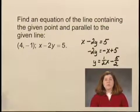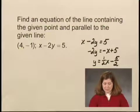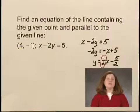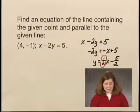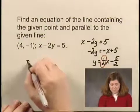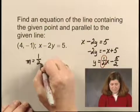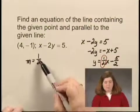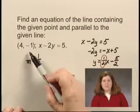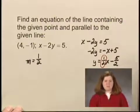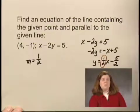The slope of this line is 1/2. Since we are looking for a line parallel to this line, the slope of the line we want to find is also 1/2. Now we know the slope of the line we're looking for and a point on the line. We can find the equation of this line using two methods, and we'll show both of them.